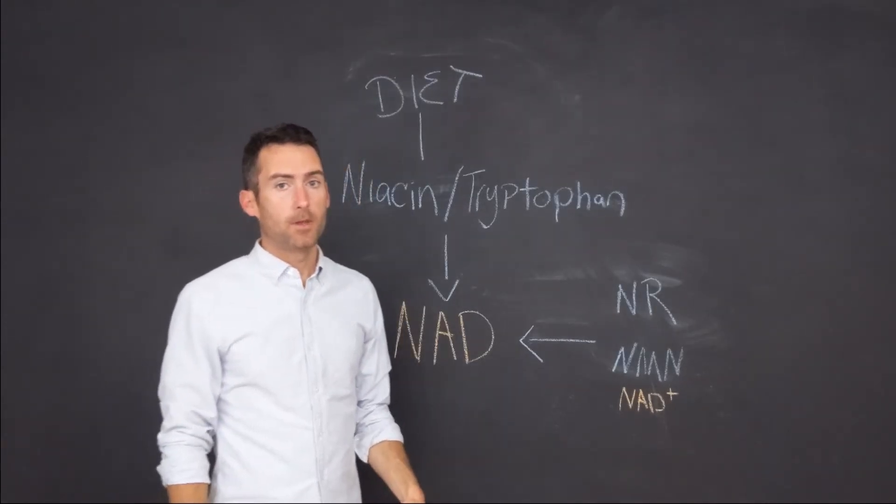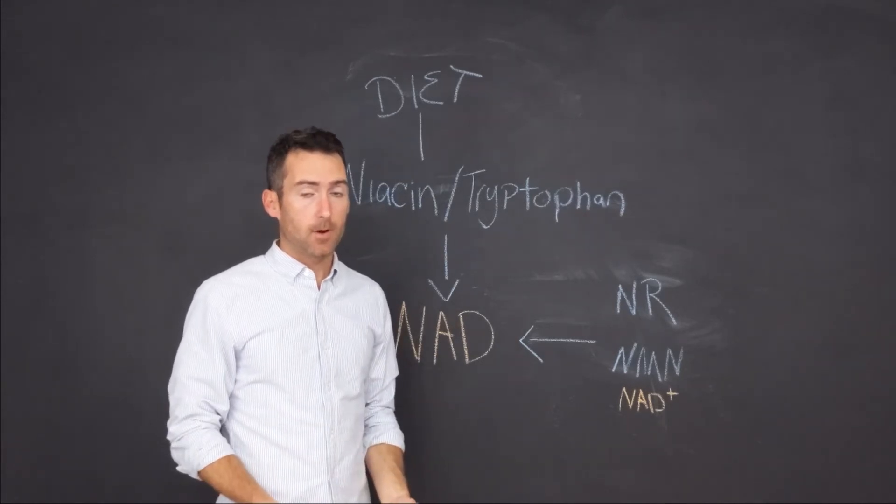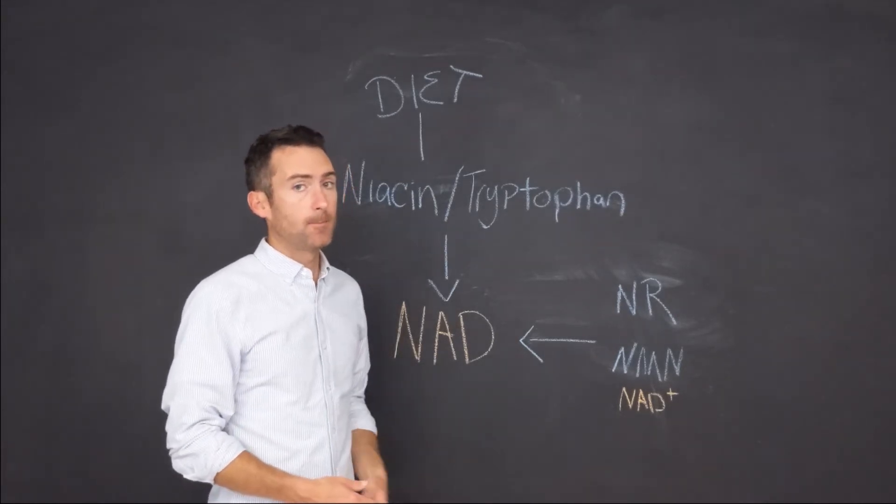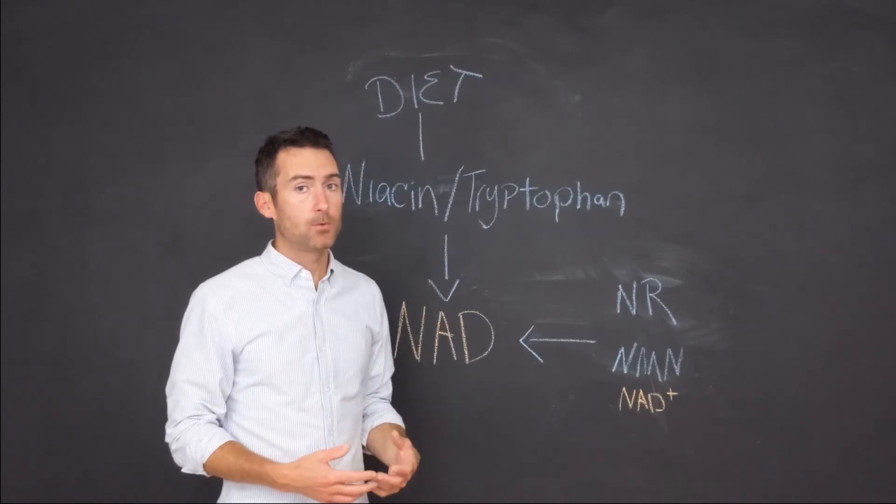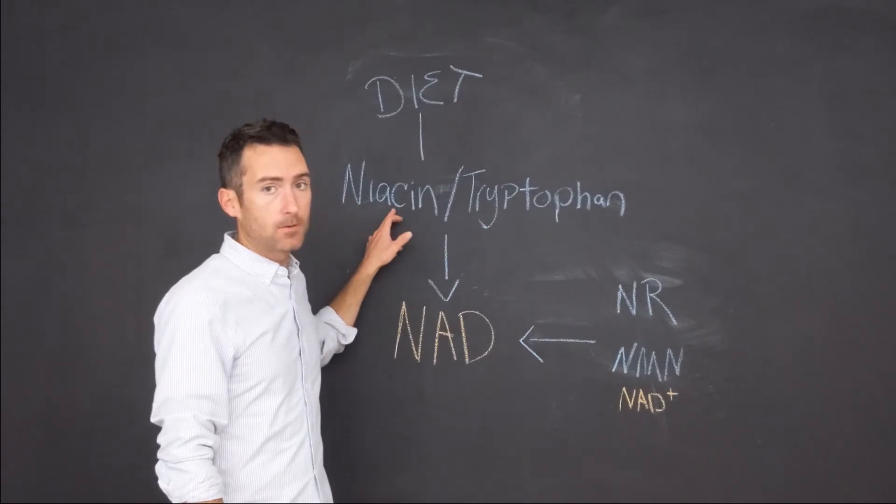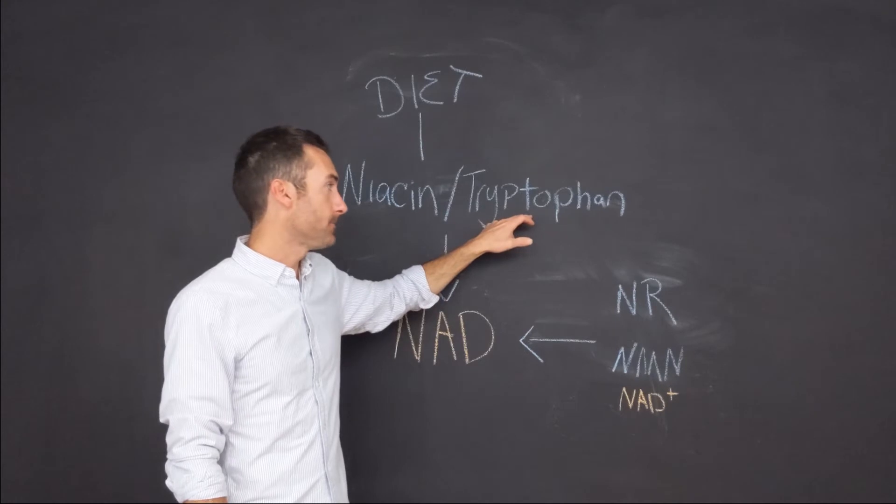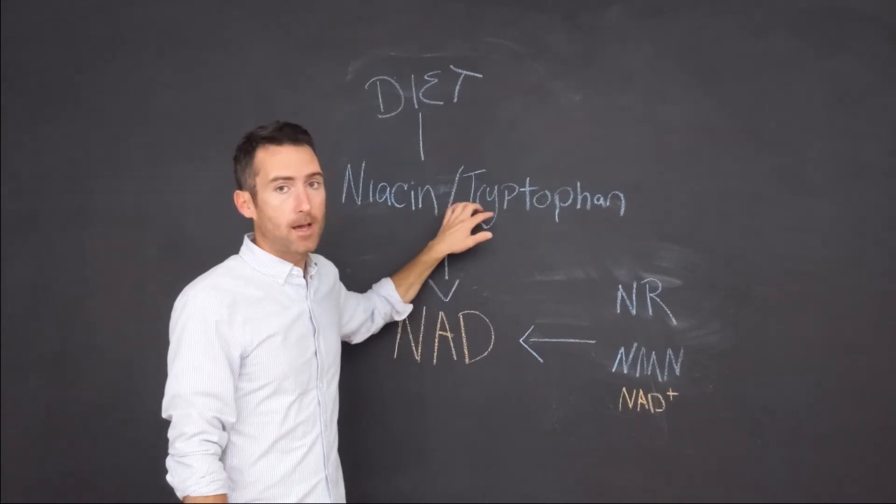I really wanted to go over a few things about the diet and how we take things from our diet to make NAD. So in our diet, we're going to be looking for two substrates that make NAD: one is niacin, which is vitamin B3, and tryptophan, which is an amino acid. Both of these are in high amounts in meat